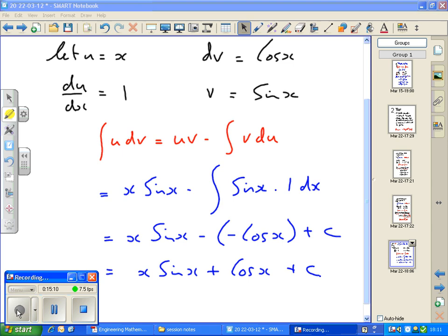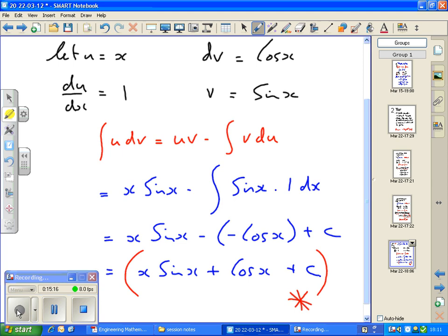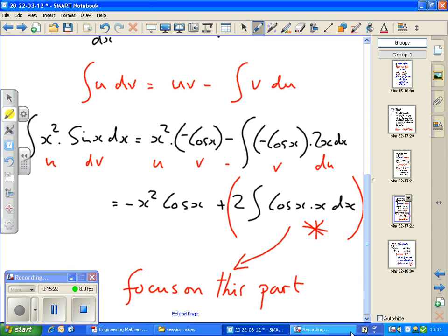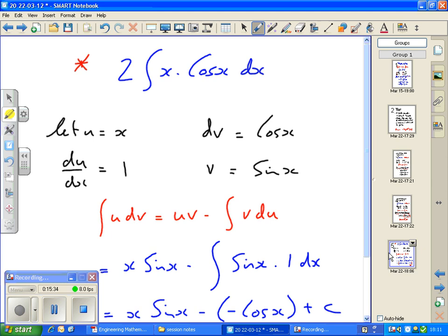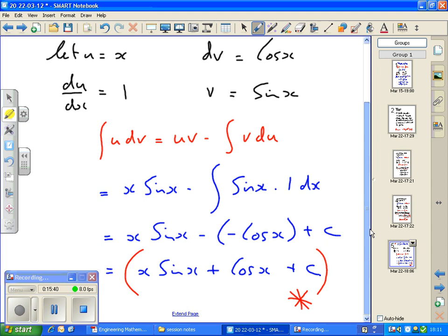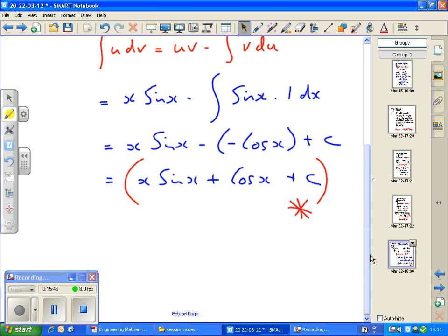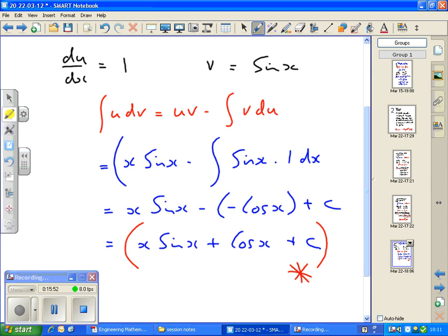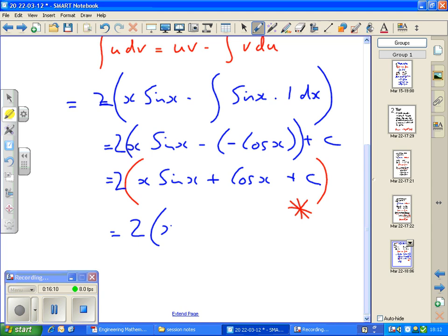Now this is our asterisk. This is the solution to the previous part here. So instead of this integral, we're going to put in that solution we had there. Oh, let's just check. I took into account that 2 that was there. Did I do that at the end? 2. No, I didn't, did I? So this is all times by 2. So, in other words, this is 2 times this. And 2 times this. And 2 times this. So we end up with 2 times x sin x plus cos x.